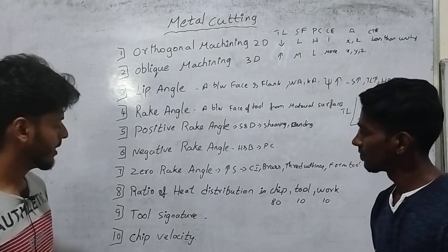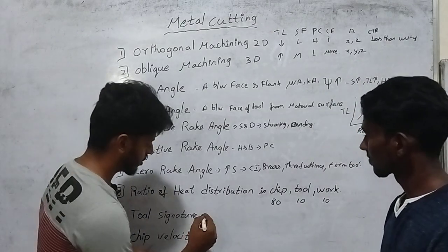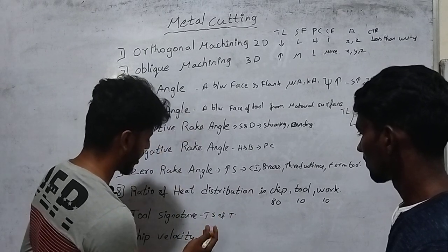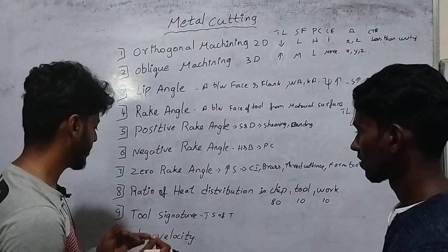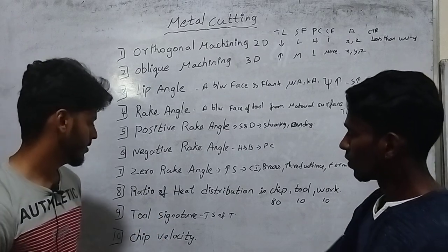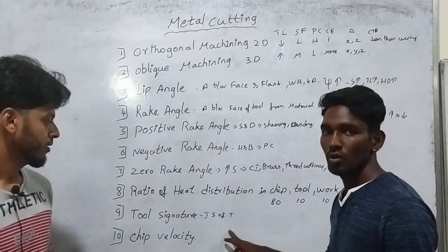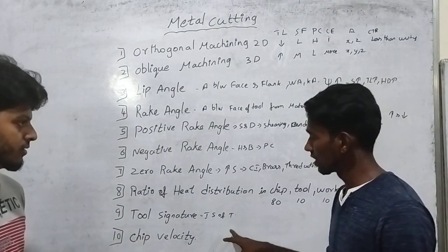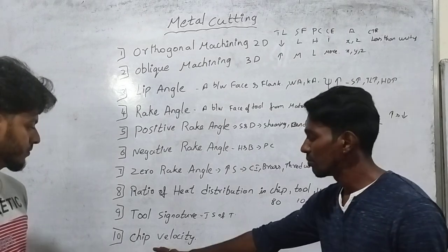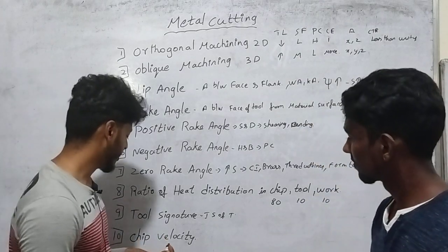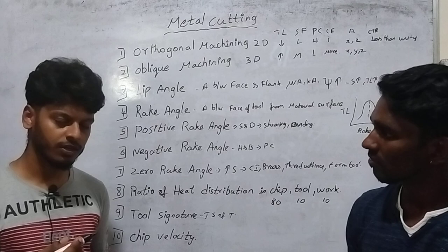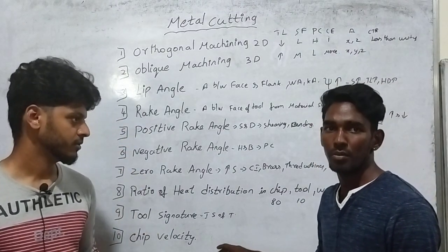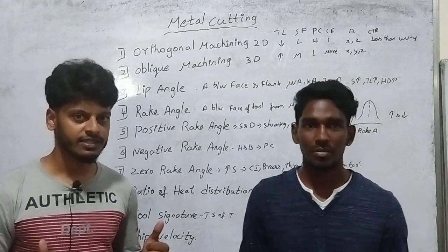Tool Signature refers to the total specification of a tool, or the orthogonal view of the tool. Now let's talk about chip velocity — the velocity of the tool related to the chip velocity. Thank you, champions.